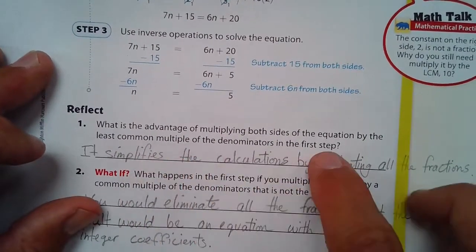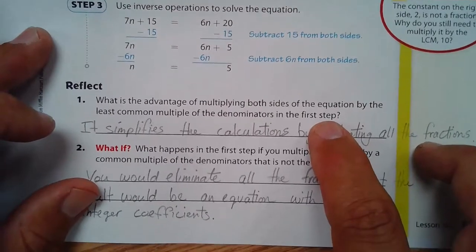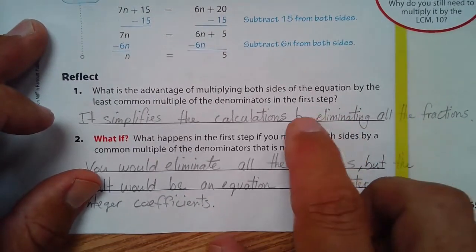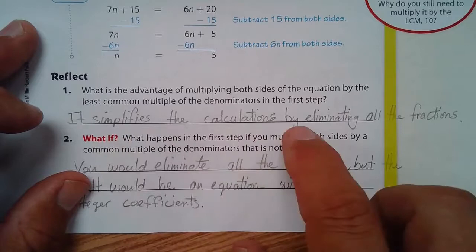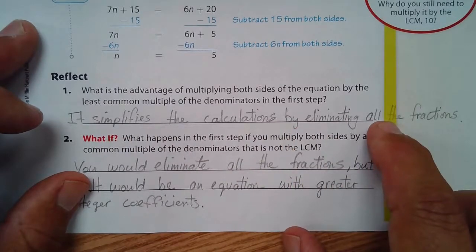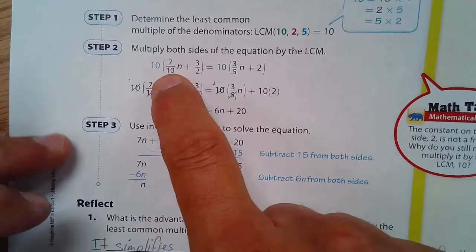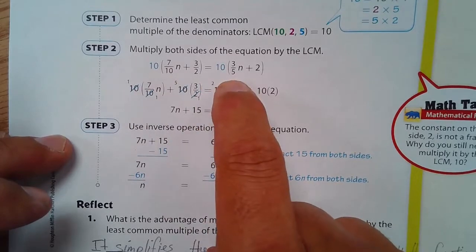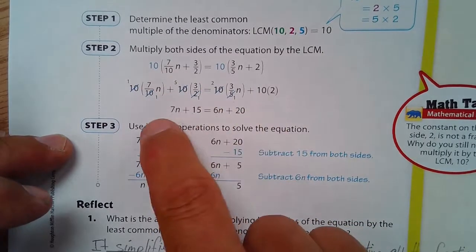What's the advantage of multiplying both sides of the equation by the least common multiple of the denominators in the first step? Well, it simplifies the calculations by eliminating the fractions. So we multiplied everything by the least common multiple and we have no more fractions.